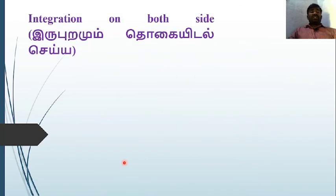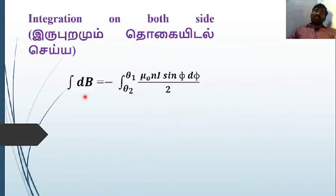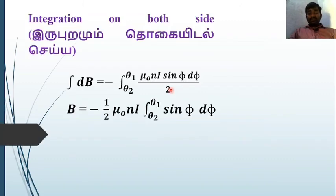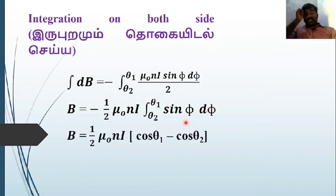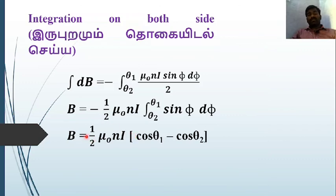Integrating both sides, the total magnetic field B = −∫(θ₂ to θ₁) μ₀nI·sinφ·dφ / 2. Taking the constants out: B = −(μ₀nI/2)∫sinφ·dφ. Integrating sinφ gives −cosφ, so the two negatives give a positive. Applying the limits θ₁ and θ₂: B = (μ₀nI/2)[cosθ₁ − cosθ₂]. This is the required result.